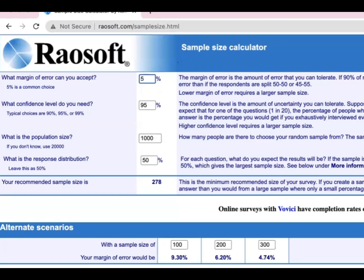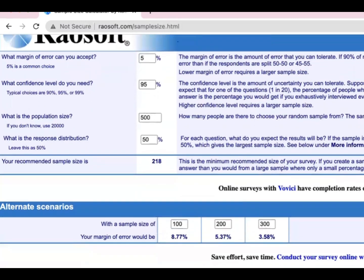So this is how you are going to find the sample size. It's very easy to find the sample size using this Raosoft calculator. If you have, for example, 500 respondents and you're using 95% confidence level and a margin of error of 5%, you are going to have 218 sample size.